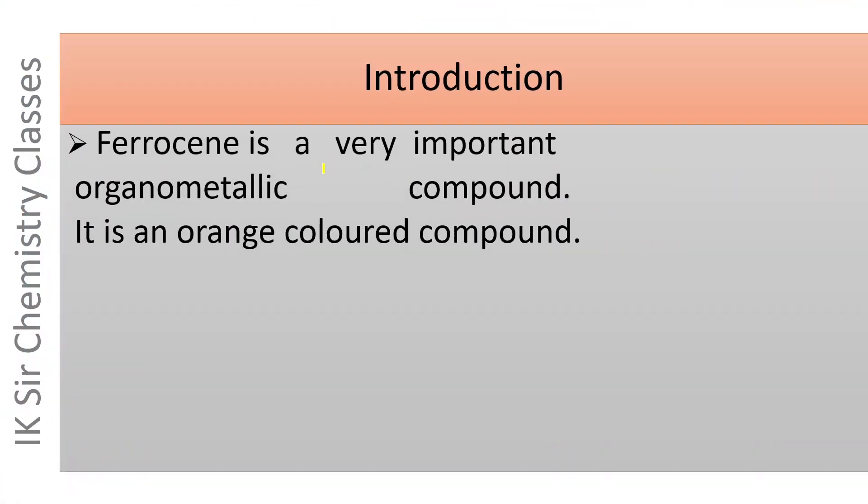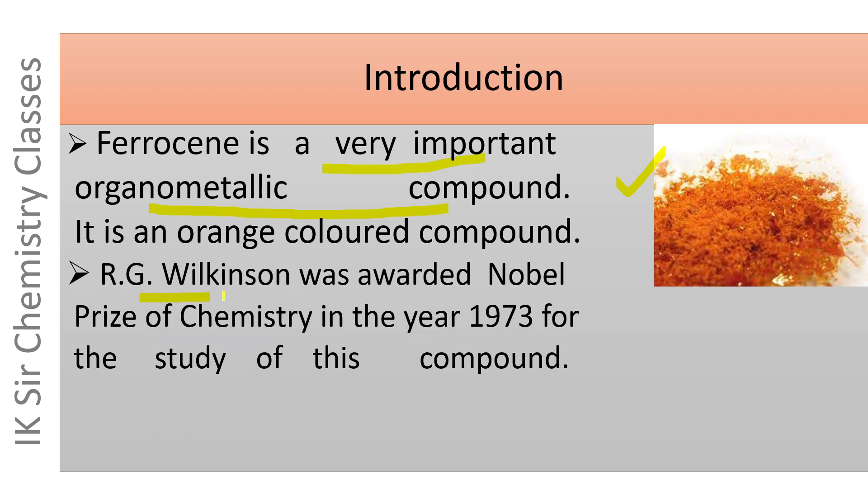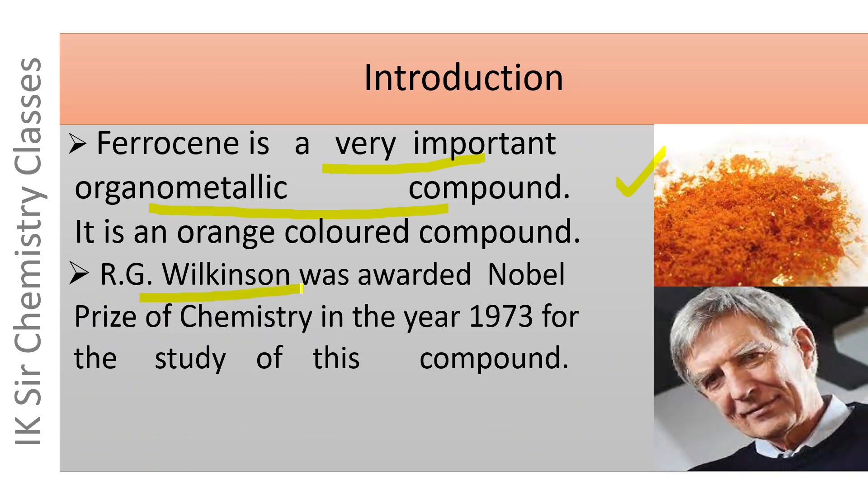Ferrocene is a very important organometallic compound. It is an orange colored compound. R.G. Wilkinson was awarded Nobel Prize of Chemistry in the year 1973 for the study of this compound.